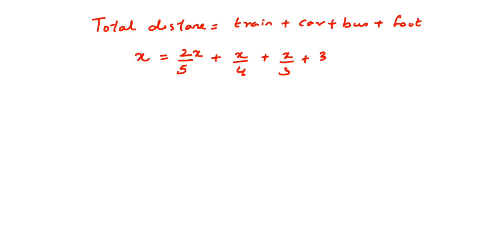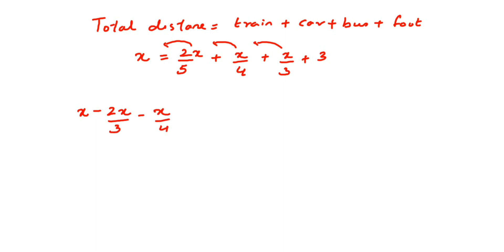Now we need to solve this equation. We'll transpose every fraction to the left-hand side to bring all variables to one side. So two x by five, x by four, and x by three are transposed to the left. When you transpose, the sign changes to negative. This gives: x minus two x by five minus x by four minus x by three equals three.